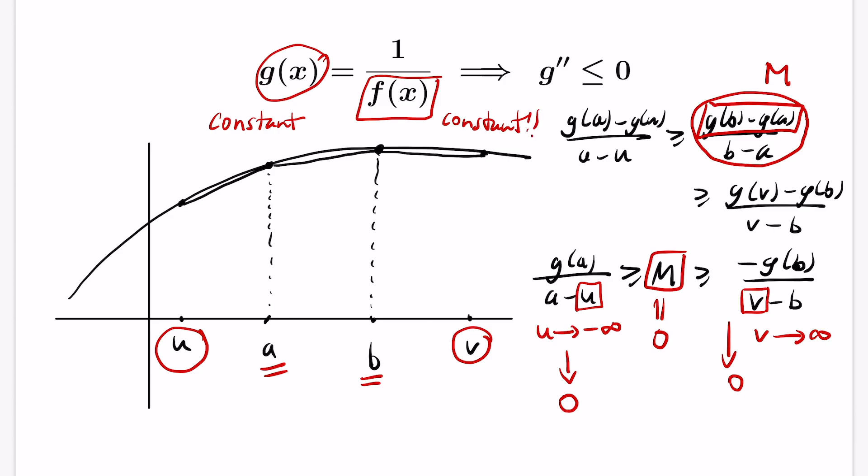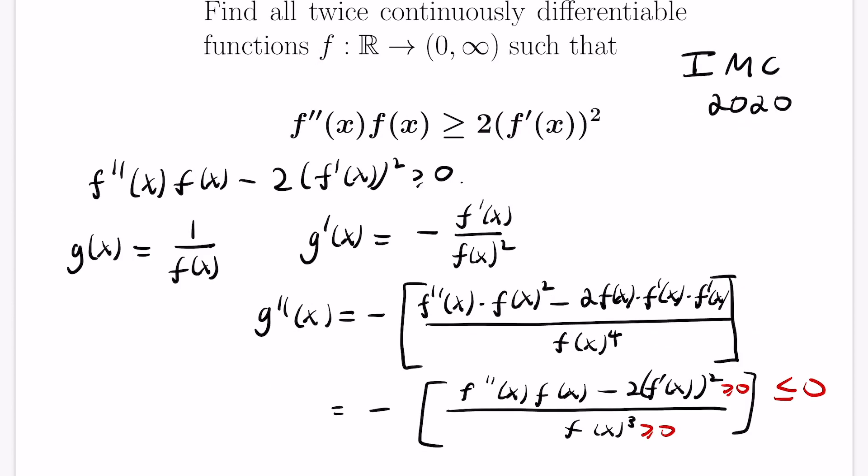So using a combination of the geometry on this page, and the algebra we did on this page, we conclude that the only possible functions that satisfy this particular inequality, given the conditions that we have in the problem are functions that are constants. Now if you want, you can leave some comments in the chat on which constants are even allowed in the first place to complete this problem.